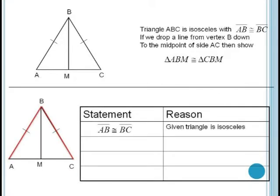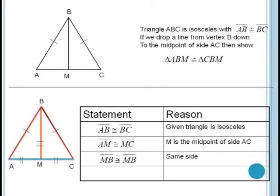We know side AB is the same as side BC, since we're given the triangle as isosceles. Also, side AM is the same as MC, since we're told that M is the midpoint of side AC. And finally, side MB is equal to itself. Thus, we've shown that three sides of one triangle are the same as three sides of another triangle. Since three sides is enough to uniquely determine a shape, then we get that triangle ABM has to be congruent to triangle CBM by our SSS criterion.